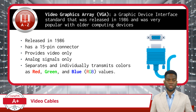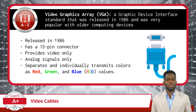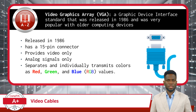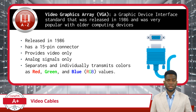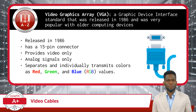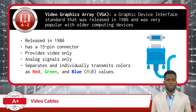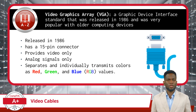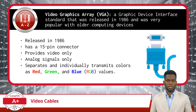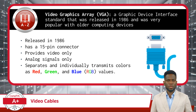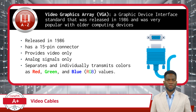First up, we have VGA cables. VGA is short for Video Graphics Array and is a graphic device interface standard that was released in 1986. It was very popular with older computing devices. This standard is not the oldest graphic interface standard, but is the oldest one we will cover in this video. Some useful facts about this standard are that it uses a 15-pin connector that is often signified by the color blue. The standard is designed to transmit video only, so if you want audio, you are going to need another interface and cable for that.